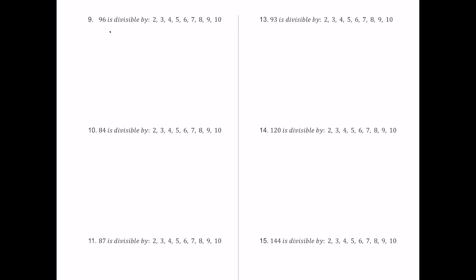For number 9, we have 96. It ends in 6, so 2 works. Half of 96 is 48 — still even — so 4 works. Half of 48 is 24 — still even — so 8 works. The sum 9 plus 6 is 15, which is a multiple of 3 but not 9. The last digit is 6, not 5 or 0, so 5 and 10 fail. Since 2 and 3 both work, 6 works. Dividing 96 by 7 leaves a remainder, so 7 fails.